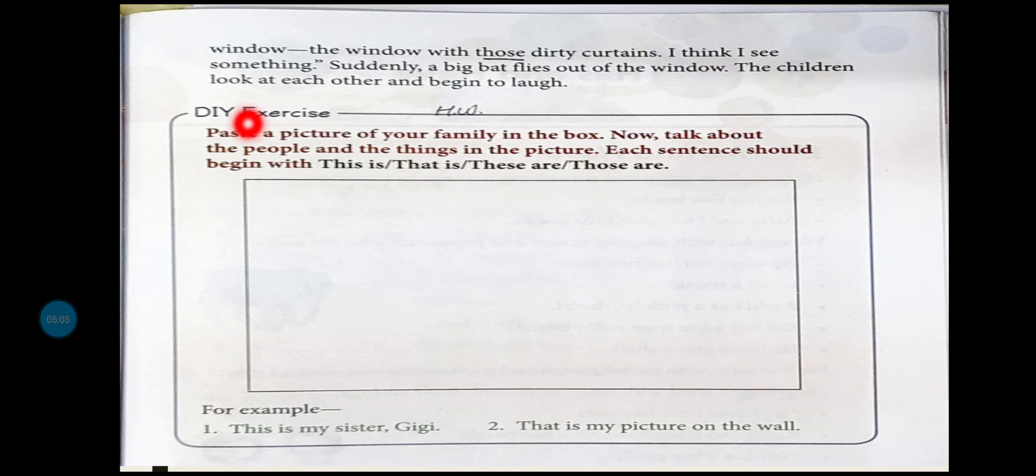I think I see something. Suddenly a big bat flies out of the window. The children look at each other and begin to laugh. तो यहाँ पर आप लोगों का exercise complete हुआ। अब यहाँ पर आप लोगों को अपने family का एक picture लगाना है और आप अपने friends group में एक दूसरे से question पूछ सकते हो या answer दे सकते हो कि this is my sister, this is my picture on the wall। इस तरह से आप this or that का use करके sentences frame कर सकते हो।